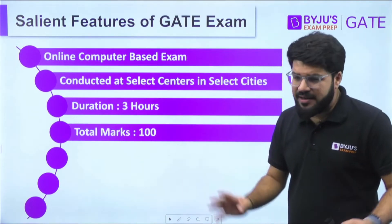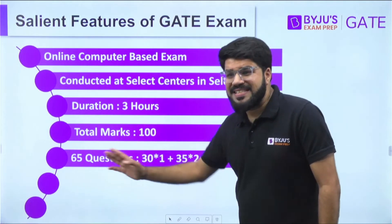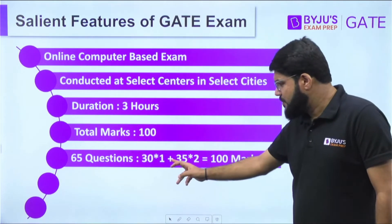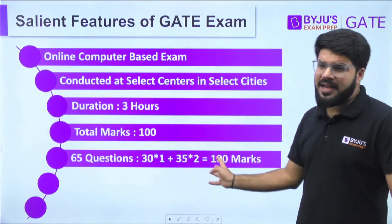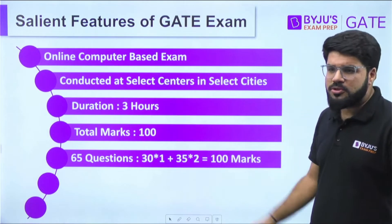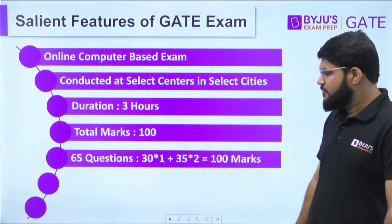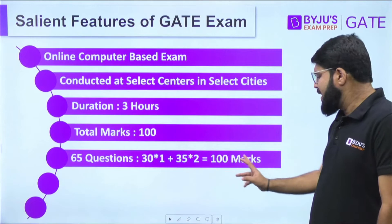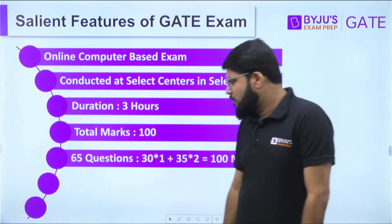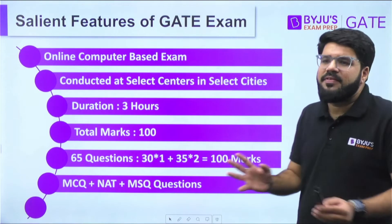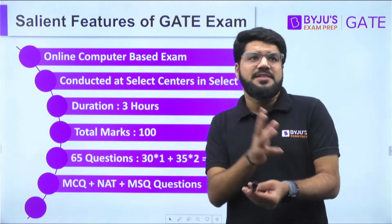The duration of the exam is a total of three hours. The total marks is 100. For these 100 marks you get 65 questions: 30 questions of one mark and 35 questions of two marks — that is how you get 100 marks total weightage.